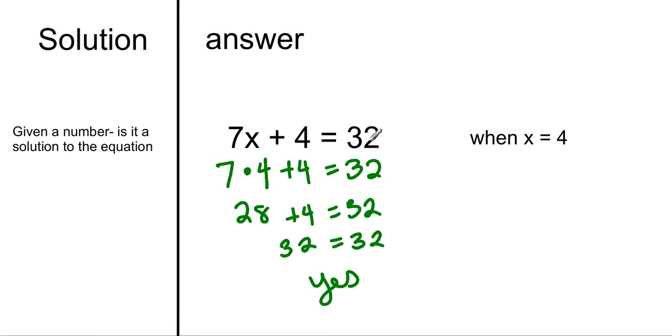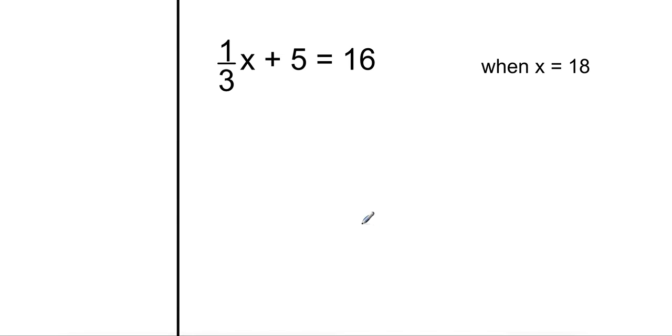You're going to show it through using your PEMDAS just like yesterday. So let's look at the next one. 1 third times x, because remember there's nothing between that, plus 5 equals 16. So let's plug it in. When x is 18. Now I know this is where you may have the issues, so let's look at this first, because we must multiply first.